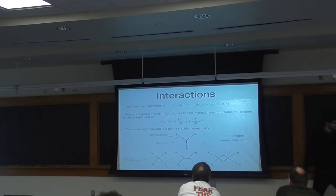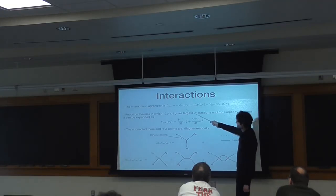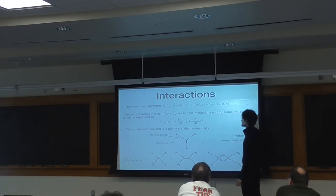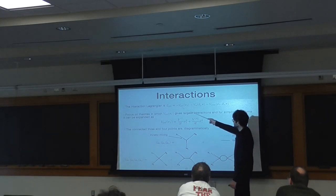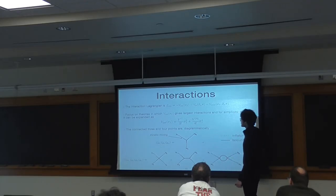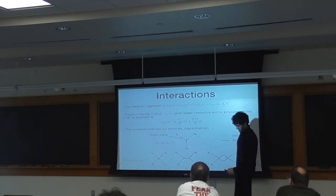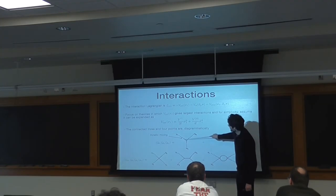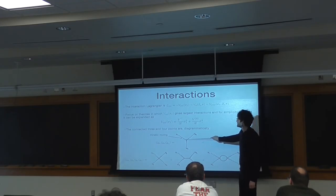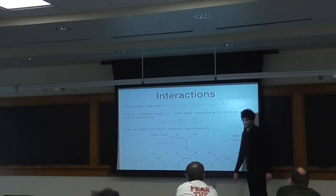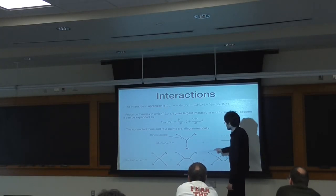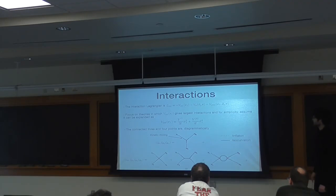Everything so far has been about the quadratic Lagrangian. To get the non-Gaussianities, we need to specify an interaction Lagrangian. In general, the interaction Lagrangian can consist of the isocurvatons, the inflaton, or products of both. For simplicity, we're going to focus on theories where V(sigma_i) gives rise to the largest interactions, and we'll assume this can be expanded as a simple cubic plus a quartic term. Because of these common raising and lowering operators, you can have non-trivial two-point functions between pi and sigma, giving rise to a connected three-point function. This trilinear contribution might be the leading contribution to the inflaton three-point. For the four-point, you might have a quartic contribution or a product of two three-points, and even quantum loops can give interesting effects.